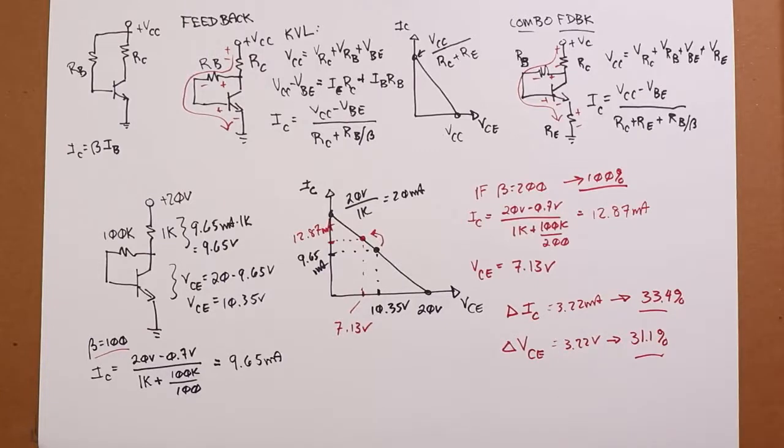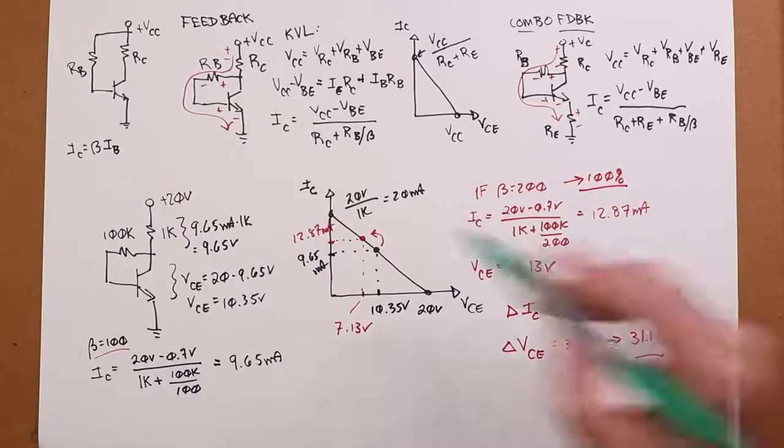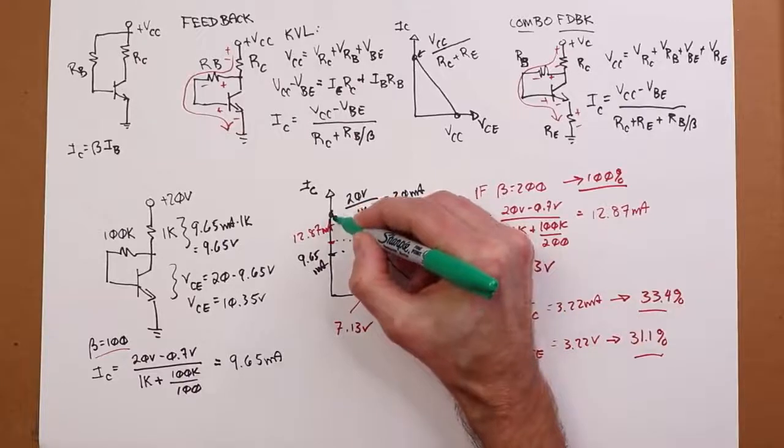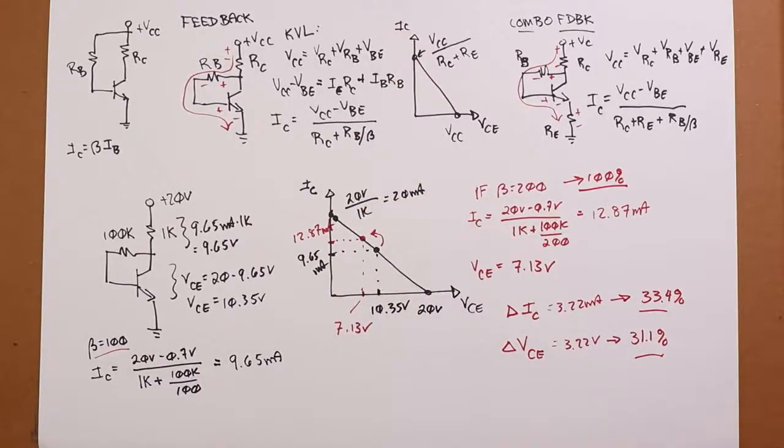So, like I said, if we had a simple base bias, that Q point would have been way the heck up here. So it's definitely improved the stability of the circuit. Okay? All right. So another way of sort of attacking the problem. Here you go.